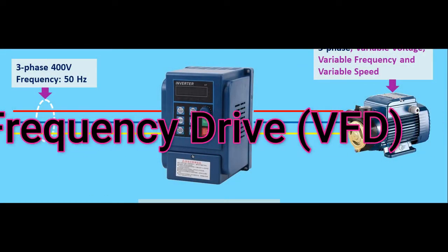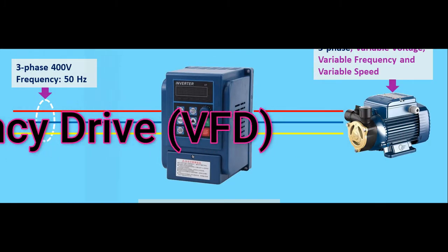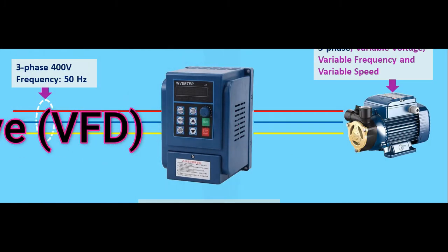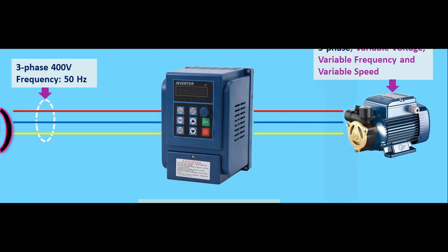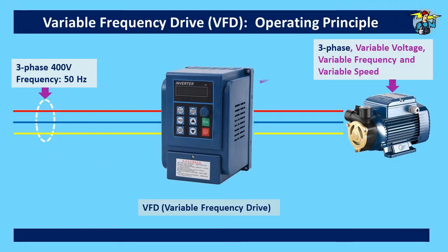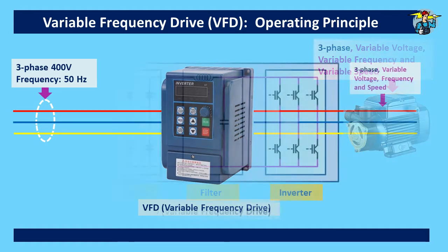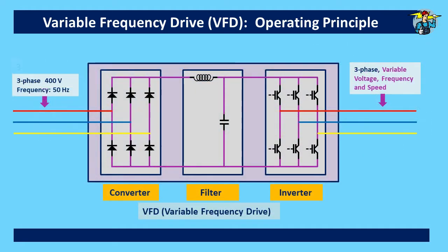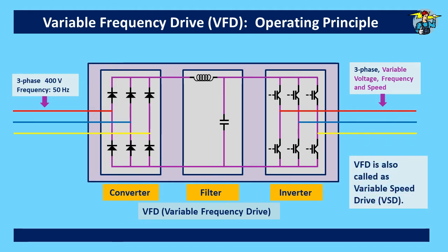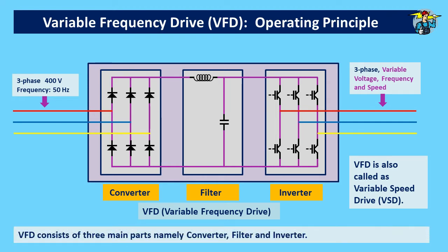Good day to everyone. Today we will see how the variable frequency drive operates to control speed of motors and compressors. VFD consists of three main parts, namely converter, filter and inverter. VFD is also called as variable speed drive or VSD.